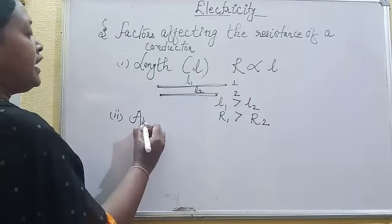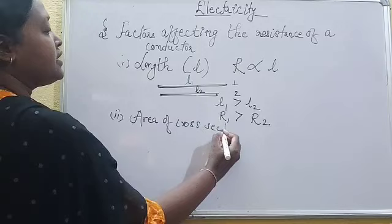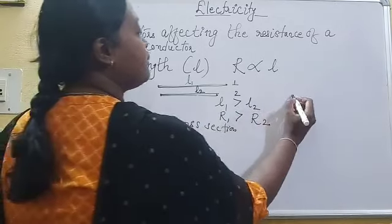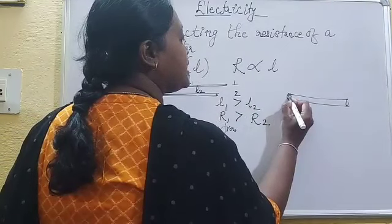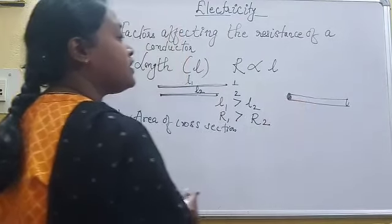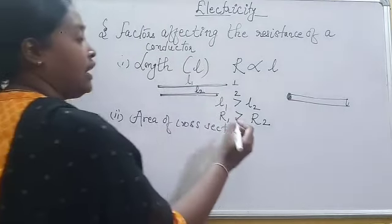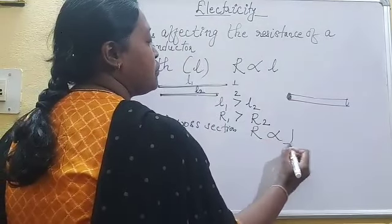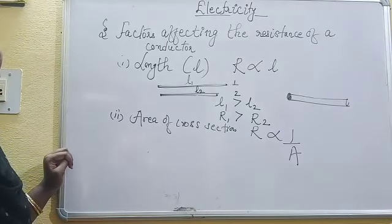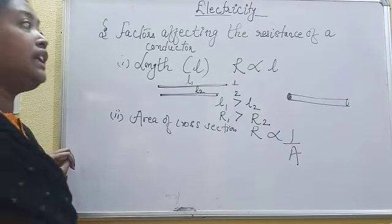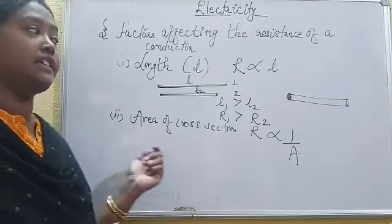The second factor is area of cross-section. This is a wire with a circular cross-section, which is called the cross-sectional area — or we can say the diameter of the wire. R is inversely proportional to the area of cross-section. That means as the diameter or thickness of the wire increases, the resistance decreases.